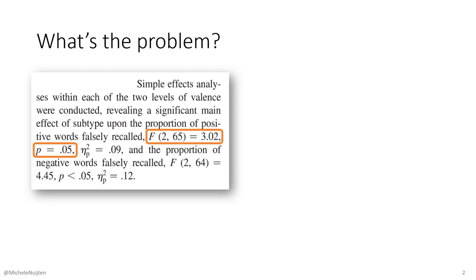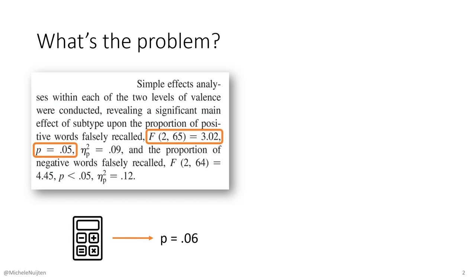There's something wrong with this result, and we can find that if we recalculate the numbers here. These statistical results have the interesting characteristic that the numbers should be internally consistent. So if I have the degrees of freedom and the test statistic, I can recalculate the p-value. If I do that, I find that the recalculated p-value is actually 0.06 and not 0.05, which would make this result not significant anymore.